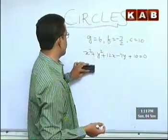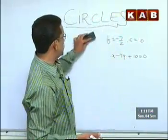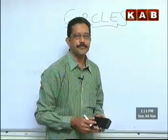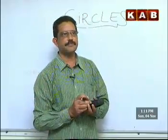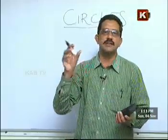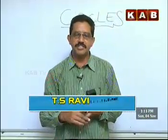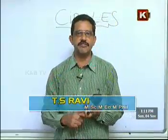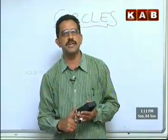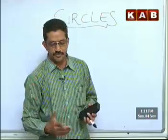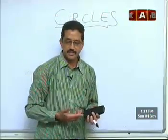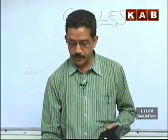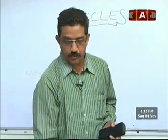We will see 2-3 more models. Did you understand this? Because first what we did, three points are given. We are putting the points in the given circle. We assumed a general circle and our target is to get G, F and C. Once we have G, F and C, we have the equation. Now let me take up one more question and tell you what is the question and how to answer it.